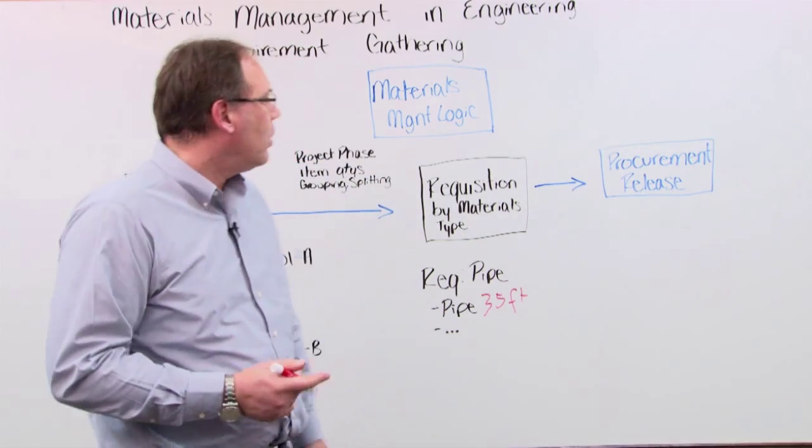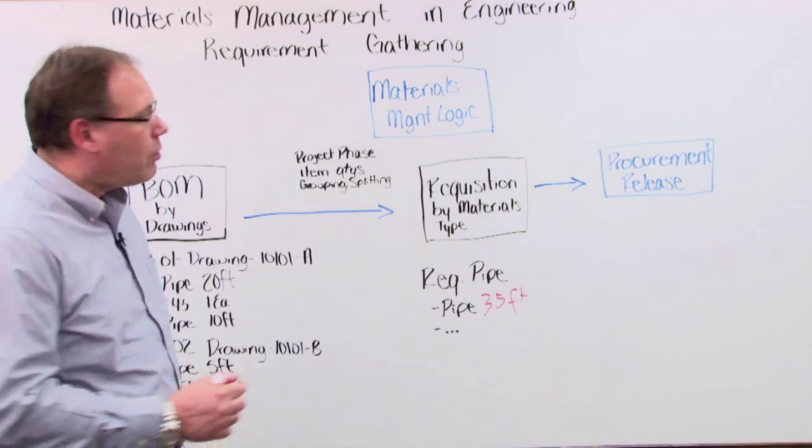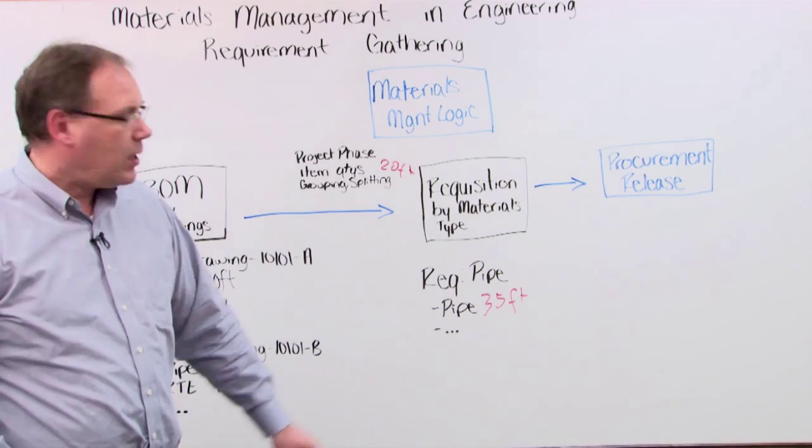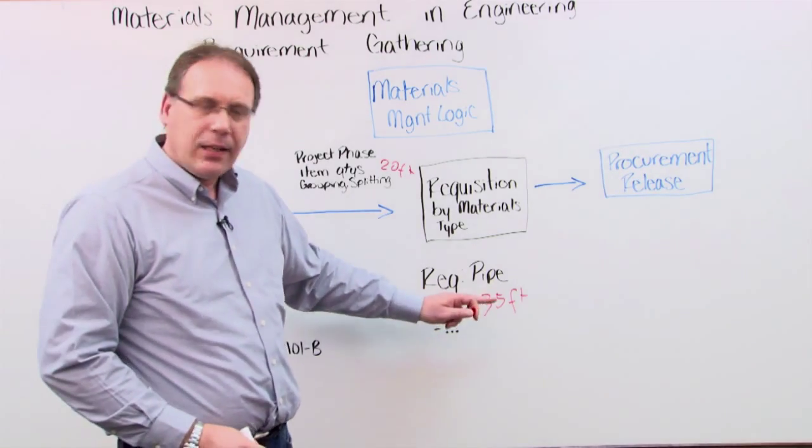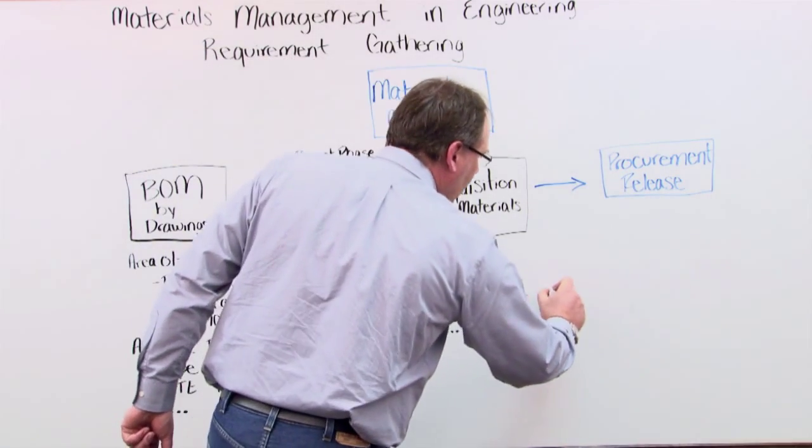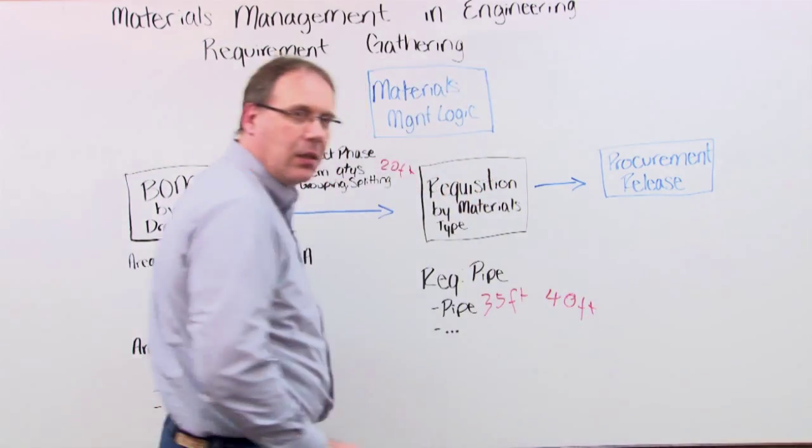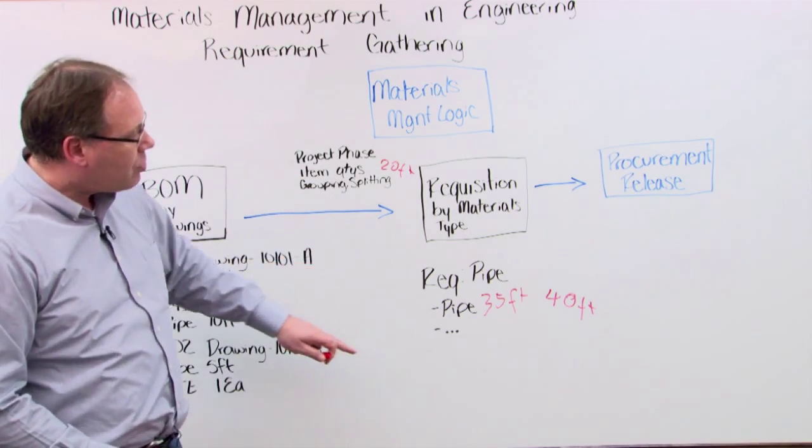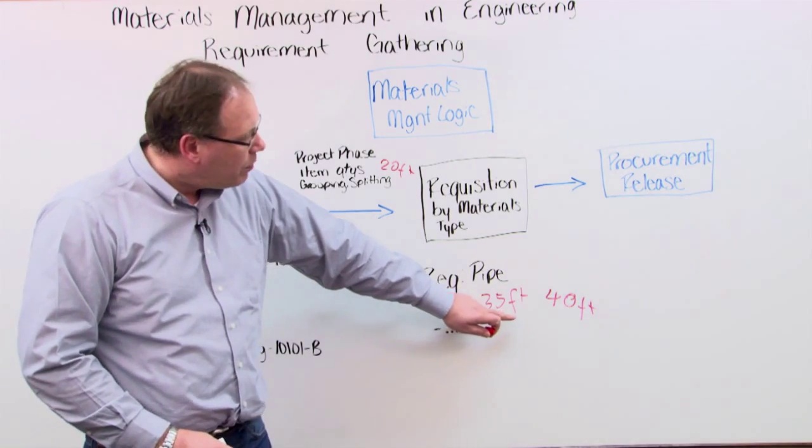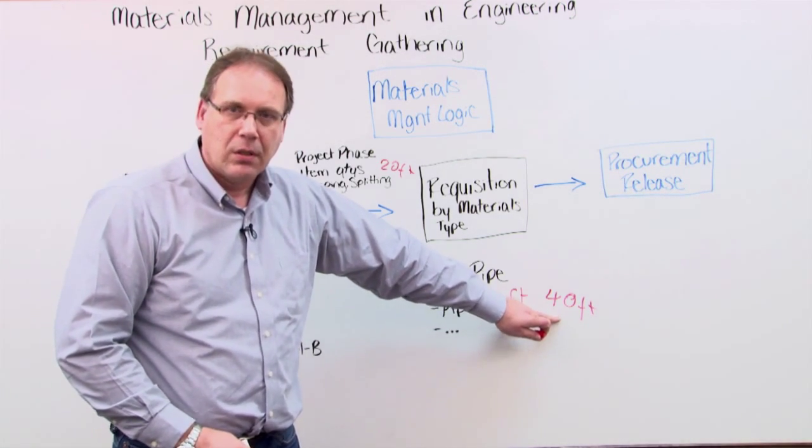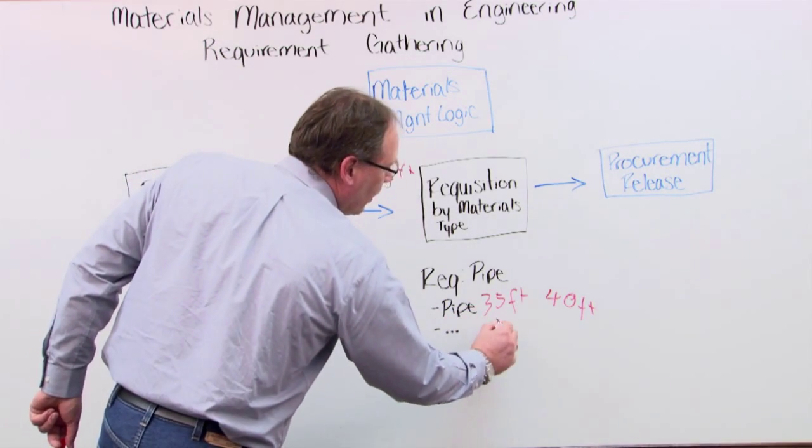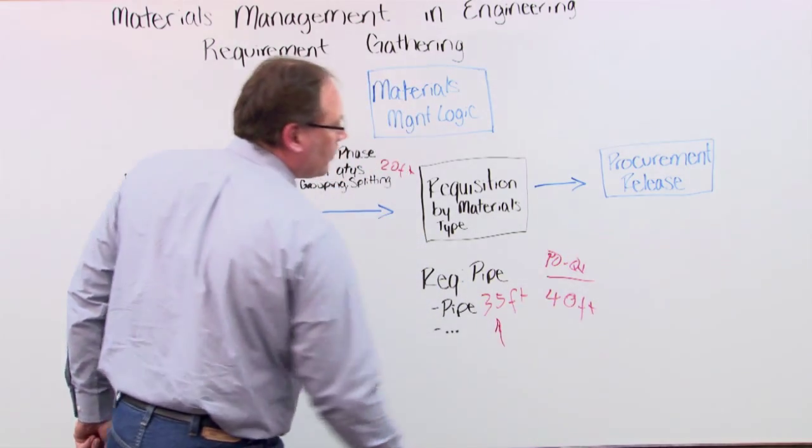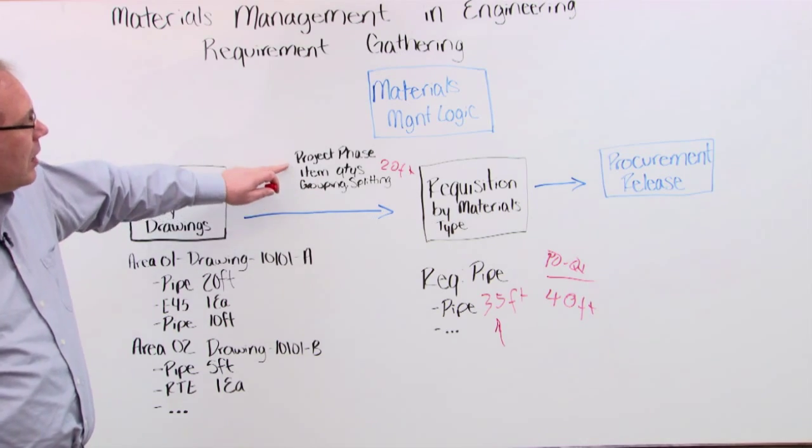Now let me do an example for pipe. You typically buy by 20 foot, so standard length is 20 foot. So you can't buy 36 foot, so the next standard length you can buy is then 40 foot, right? So the system, materials management system, is automatically converting actually what you need into purchasing quantities. So that's the requirement quantity, and this is the purchasing quantity basically you need.